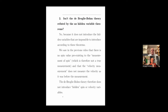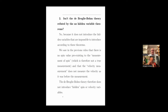Two: isn't the de Broglie-Bohm theory refuted by the no-hidden-variable theorems? That's something we already discussed in the previous video, so I won't go into too many details. The theory does not introduce the hidden variables that are impossible to introduce according to these theorems. We saw that there is no spin value pre-existing to the measurement of spin, and that the velocity measurement does not measure the velocity as it was before the measurement. So the de Broglie-Bohm theory does not introduce hidden spin or velocity variables.